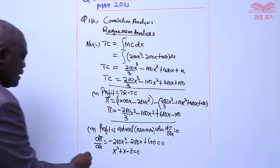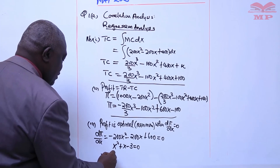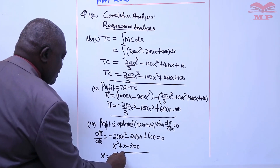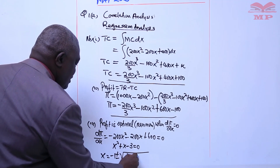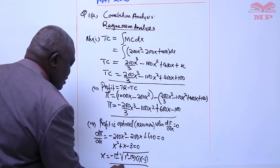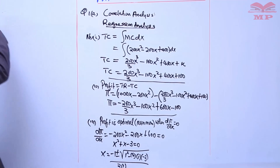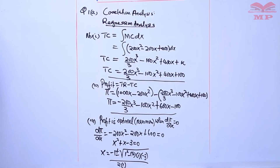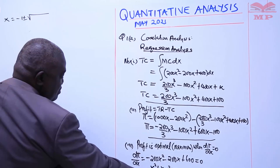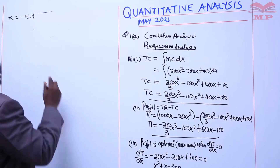Therefore x — I can solve using the quadratic formula: negative b is negative 1, plus or minus root of 1 squared minus 4ac, where c is negative 3, all over 2a which is 2 times 1. So x becomes negative 1 plus or minus root of 1 minus minus 12, which is plus 12, giving 13 under the root.